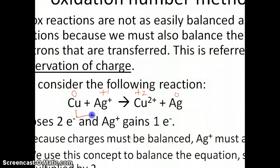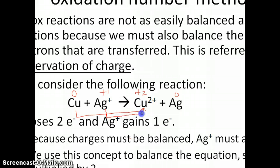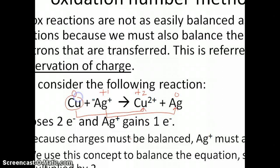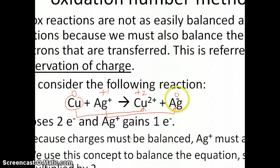So what happens is copper metal is oxidized to copper ion, and the silver ion is actually reduced to silver metal. There is an imbalance in the number of electrons because copper loses two electrons to become Cu²⁺, and silver only gains one electron to become silver zero. In order to balance this out, we have to make sure that the silver gains the same number of electrons as the copper is losing.